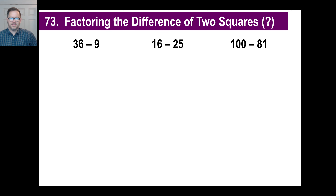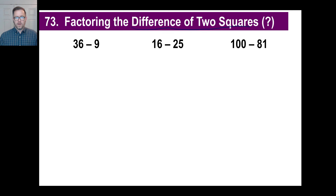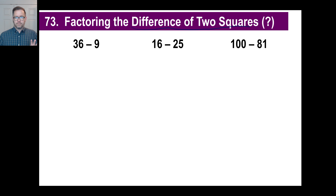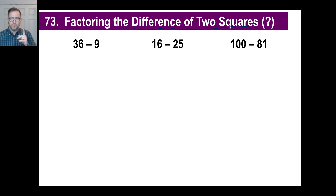Let's take a look at an odd chapter called Factoring the Difference of Two Squares. You know what a square is, right? All these numbers are squares. 36 is the square of 6, 9 is the square of 3, 16 is the square of 4, 25 is the square of 5, and so on. When you see a number, you should recognize that it's a perfect square. If somebody tells you this is 64, you should go: that's 8 times 8, the square root of 64 is 8. You'll need that ability to solve these kinds of problems.